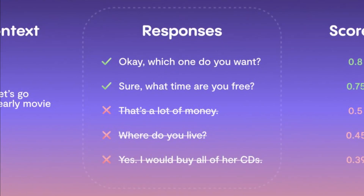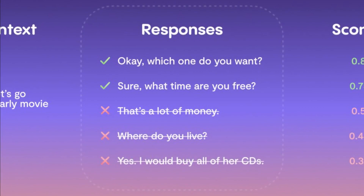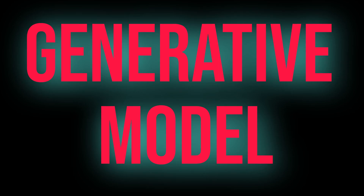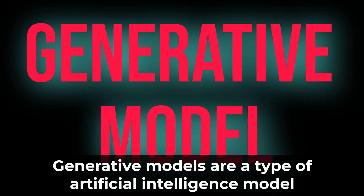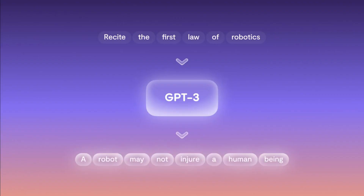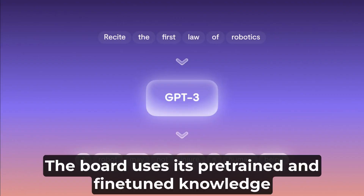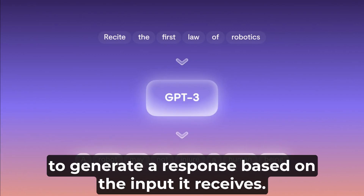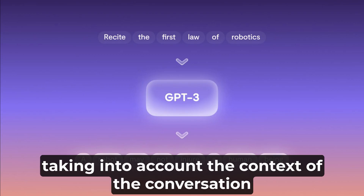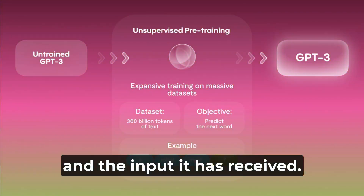Ultimately, the model gets the final response according to a retrieval model score, which reflects the degree of relevance. Generative models are a type of AI model used in chatbots to generate responses based on user input. The conversation has to be natural and engaging. The bot uses its pre-trained and fine-tuned knowledge to generate a response word by word, taking into account the context of the conversation.